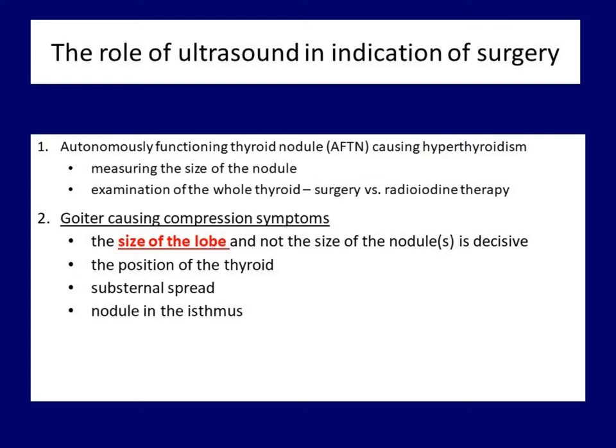However, it is clear that compression symptoms are caused not by a nodule but by the enlarged lobe. This is a very simple finding which is very often not taken into account even by experienced endocrinologists. It is not the size of a nodule but the size of the nodular thyroid lobe that determines whether a goiter can cause compression symptoms. An ultrasound finding that does not include the three diameters of the lobe is completely worthless.